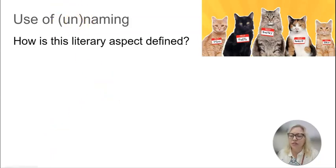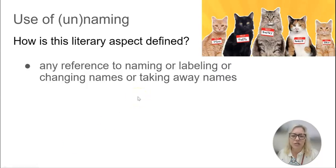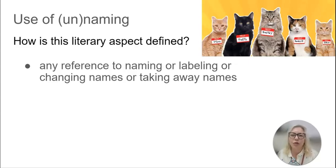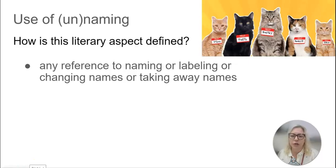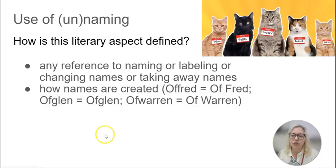How is this literary aspect defined? It's any reference to naming or labeling or changing names or taking away names. Any noun is a kind of name in that it is a label for something. Even more importantly, a proper noun — the naming of a person — is what we want to focus on. But really, any reference to naming or labeling or taking those away.